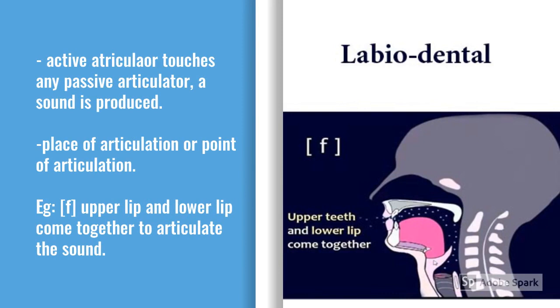When the active articulator touches any passive articulator, a sound is produced. This is called the place of articulation or point of articulation.